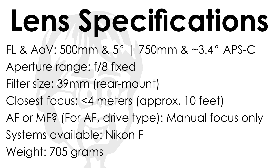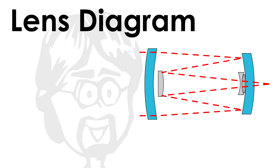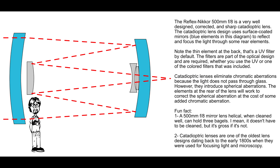The Reflex Nikkor 500mm is a catadioptric lens — essentially a small telescope. It uses two surface-coated mirrors and three optical refractive elements within the lens housing. The ray trace looks different from normal because the central part of the lens is blocked by a mirror, so it's a slightly different presentation of the way light moves through the lens.